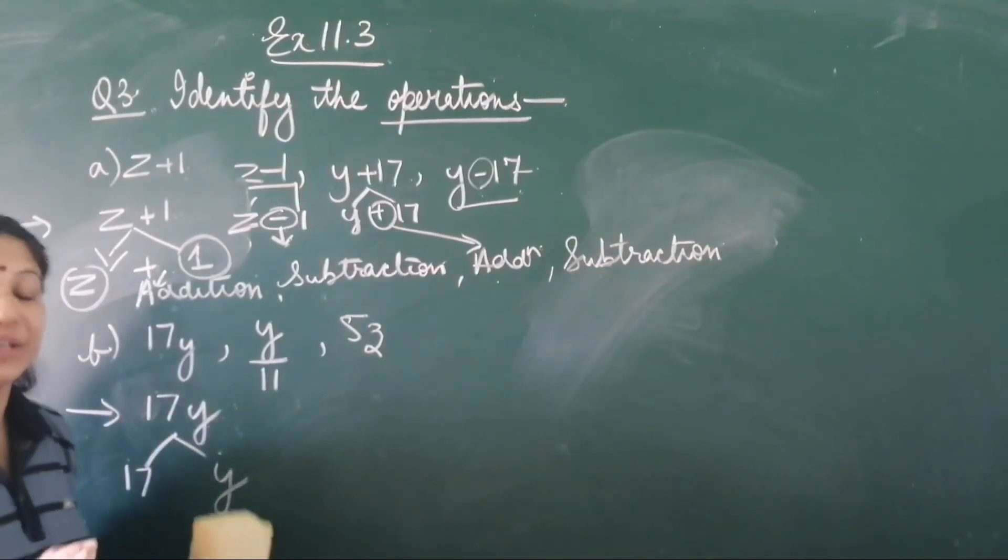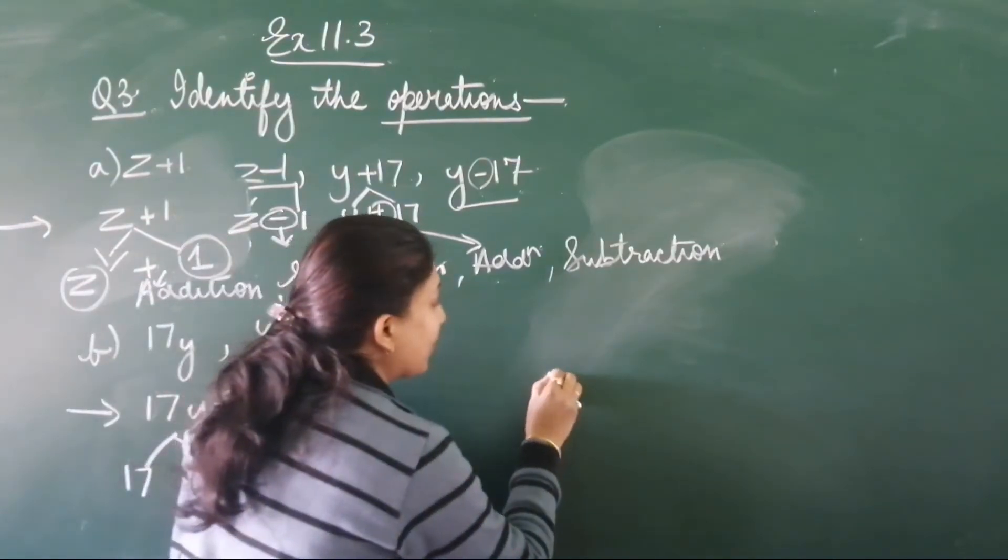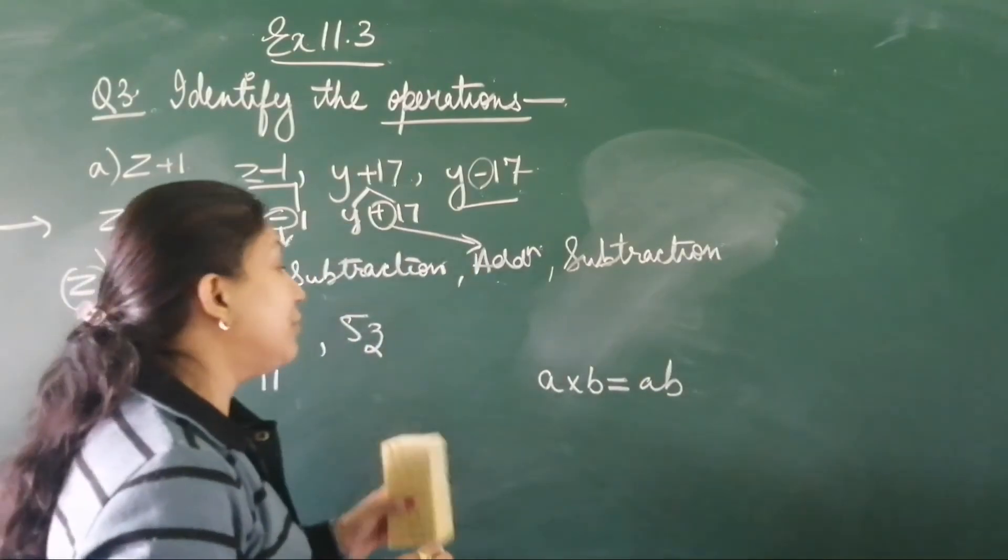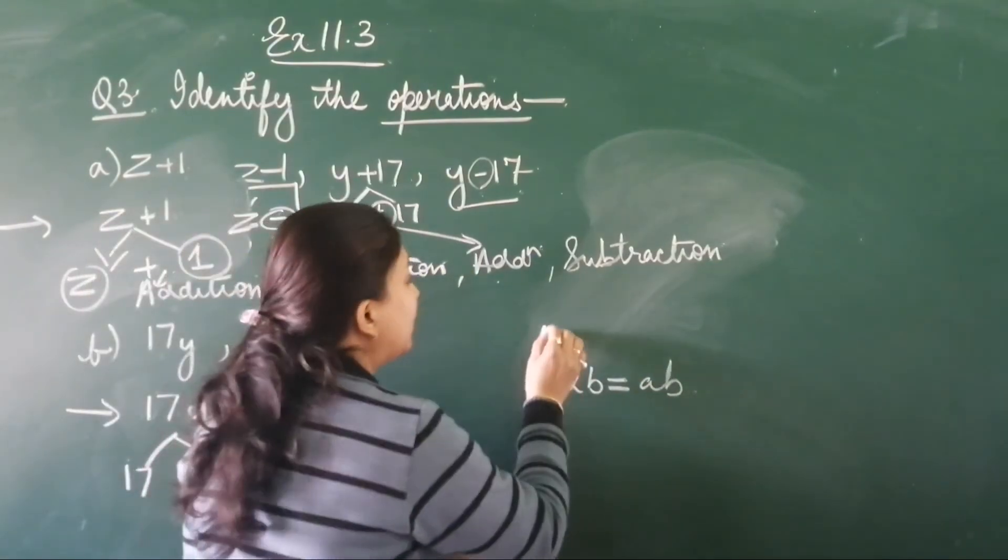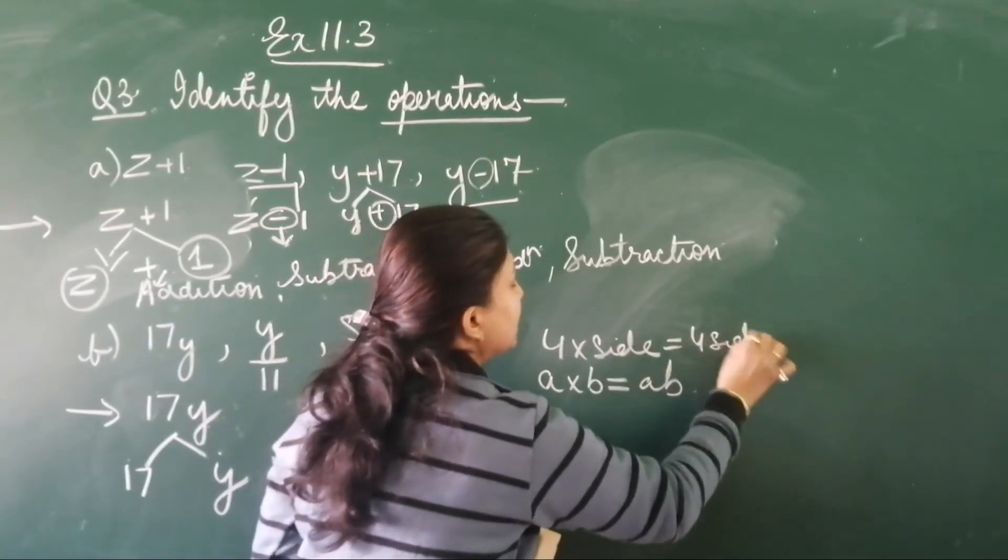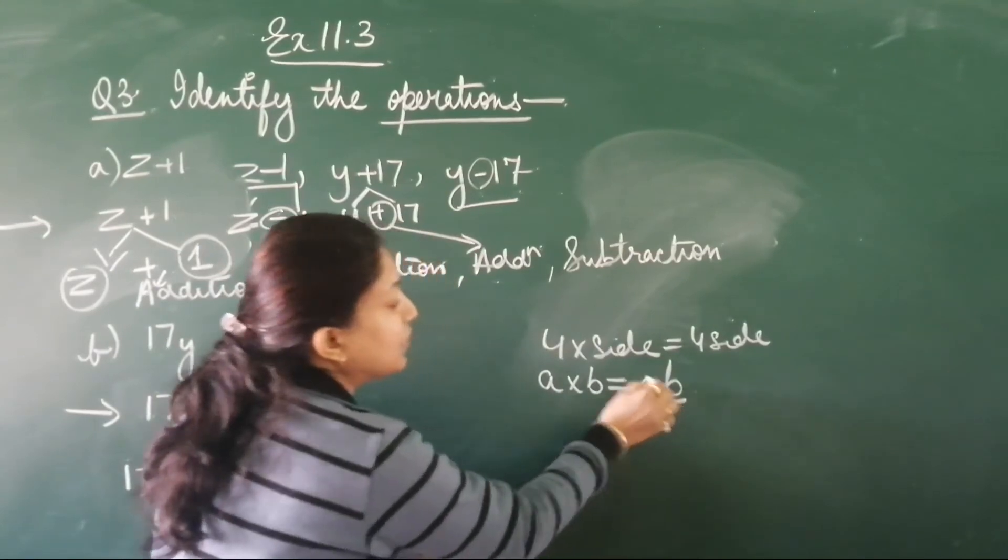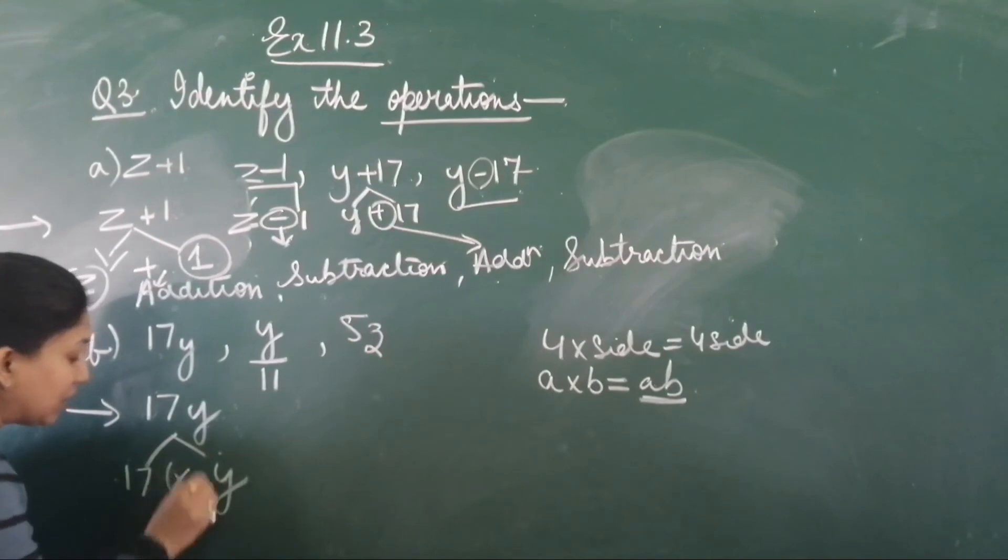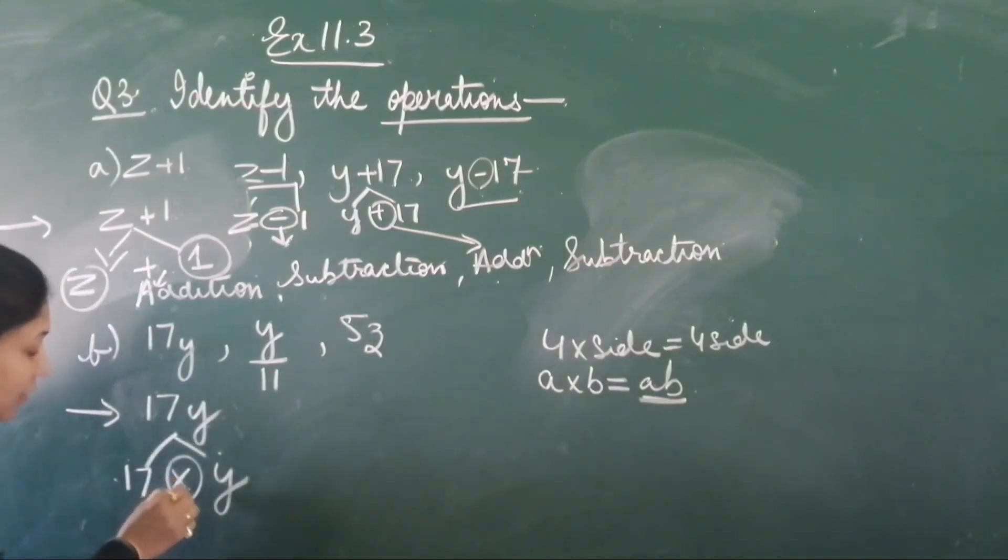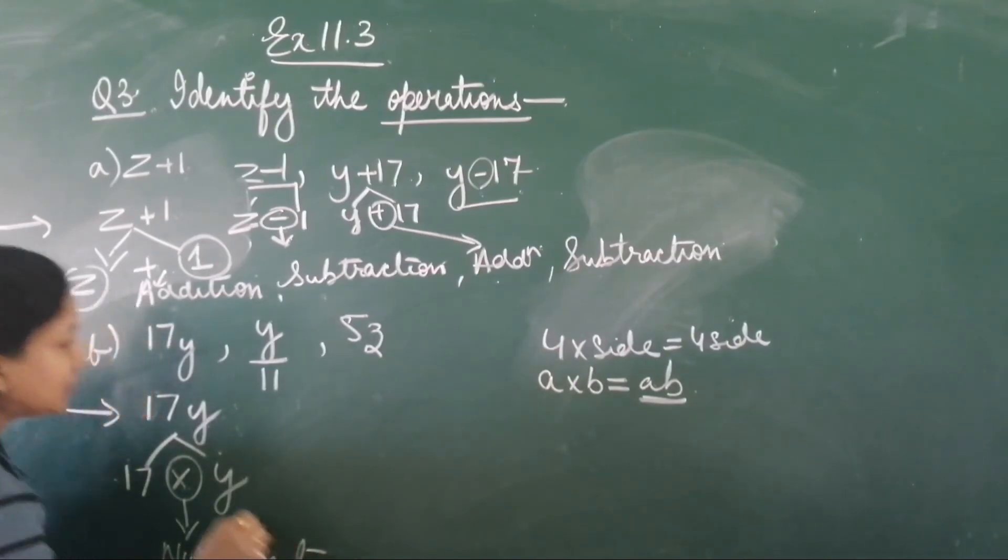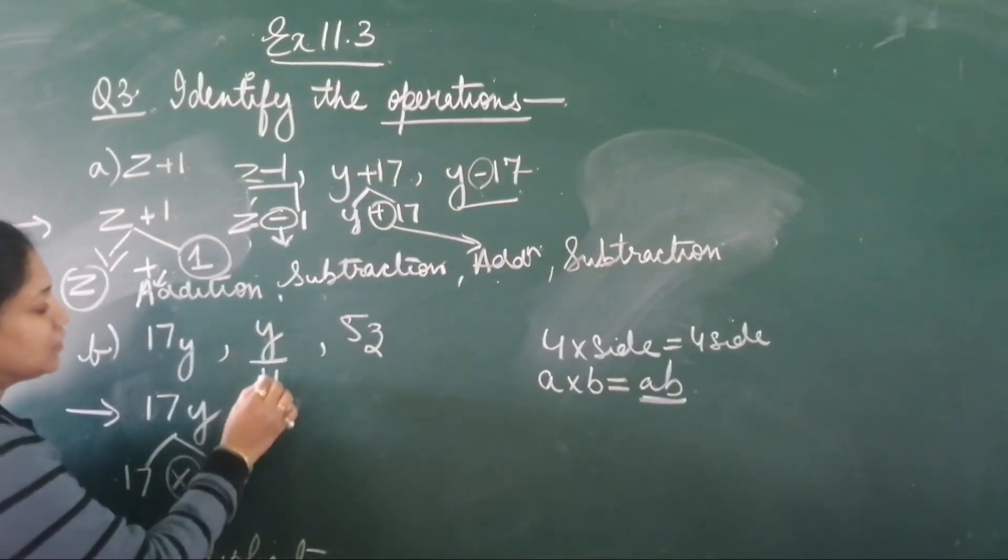See, A into B becomes AB. Or you remember, when we were generalizing the formula, 4 into side becomes 4 side. So whenever there is no sign in between, that means they are sharing multiplication. Which sign? Multiplication sign. This is used for multiplication.